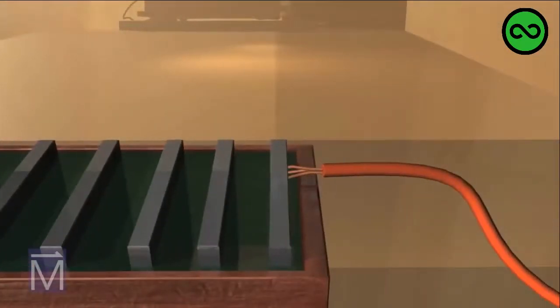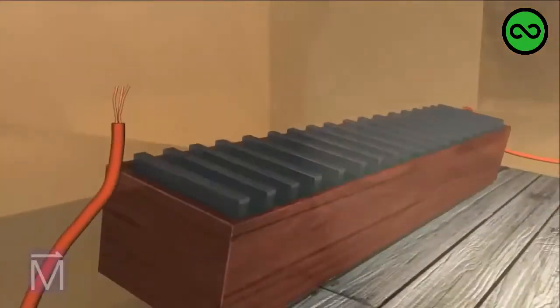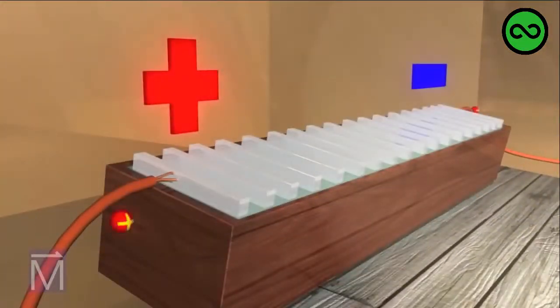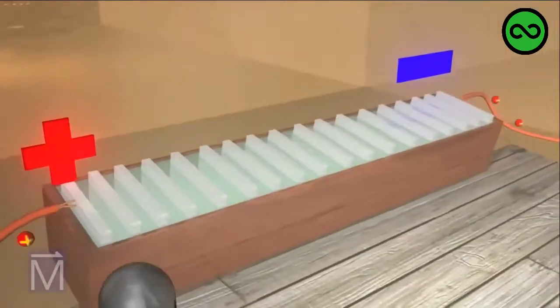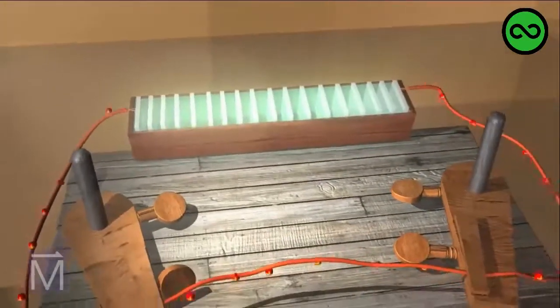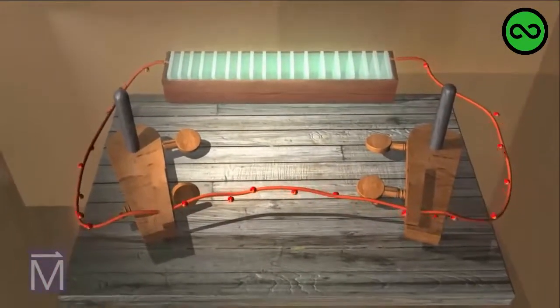Ørsted and other scientists of his day knew that when a wire was connected between the positive and negative terminals of a battery, electricity would flow through that wire. Electrons actually move from negative to positive. However, the convention is to think of electrical currents as moving from positive to negative. So that's how we'll show it here, using red particles.